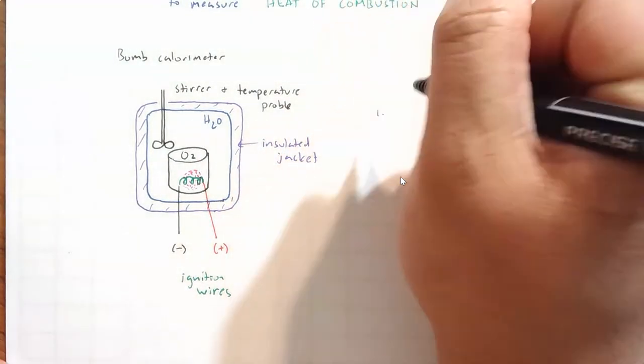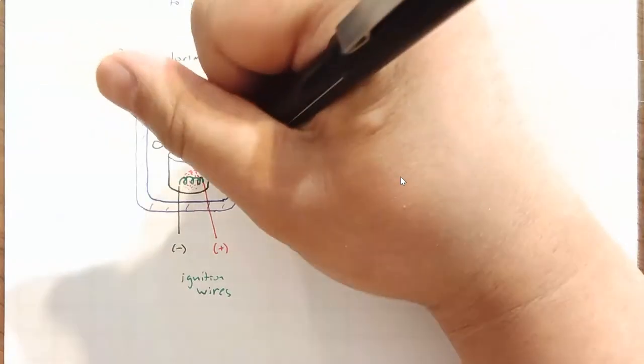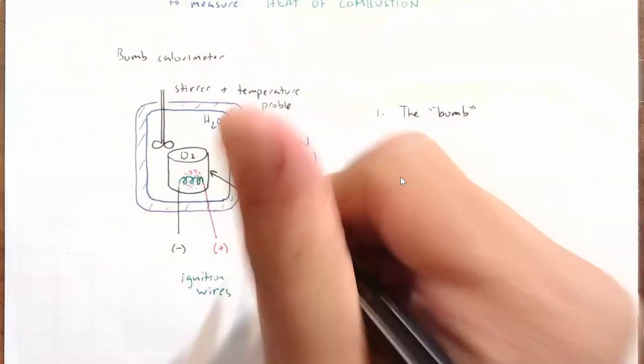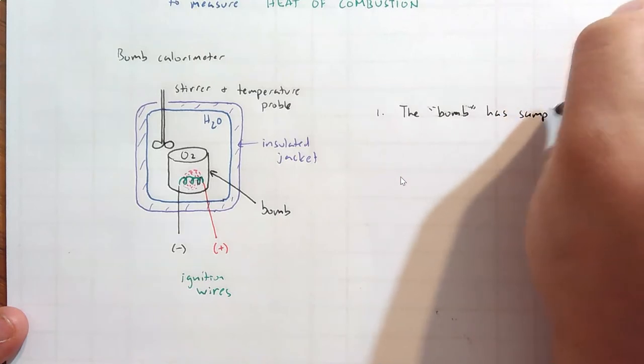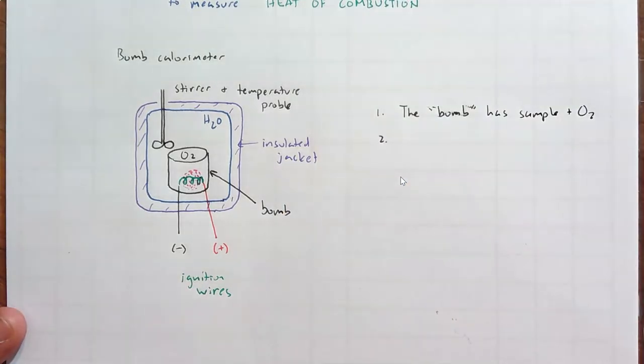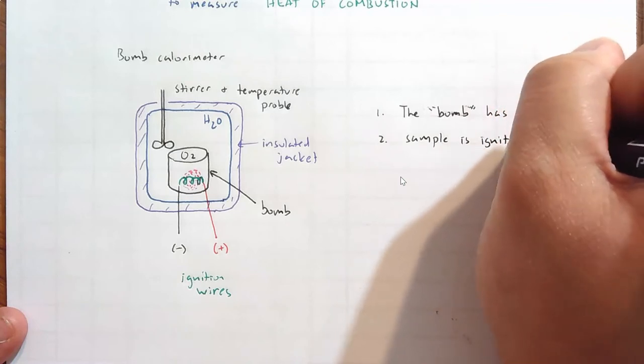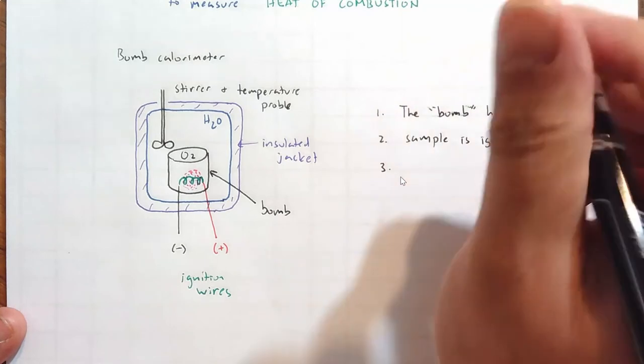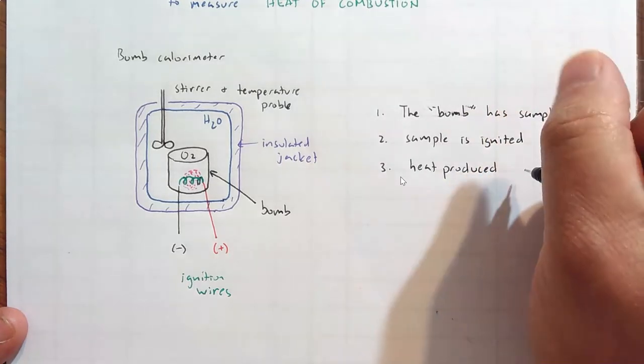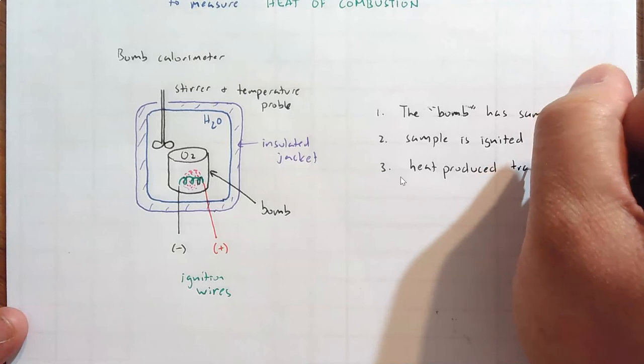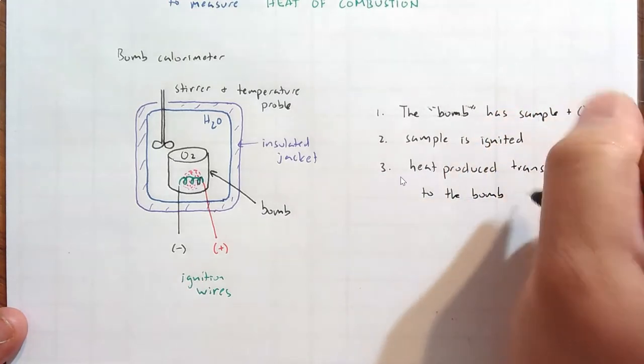Number one. The bomb has a sample plus O2. Number two. The sample is ignited. And we're running a combustion reaction. Number three. The heat produced by the reaction combustion is transferred to the bomb and water.